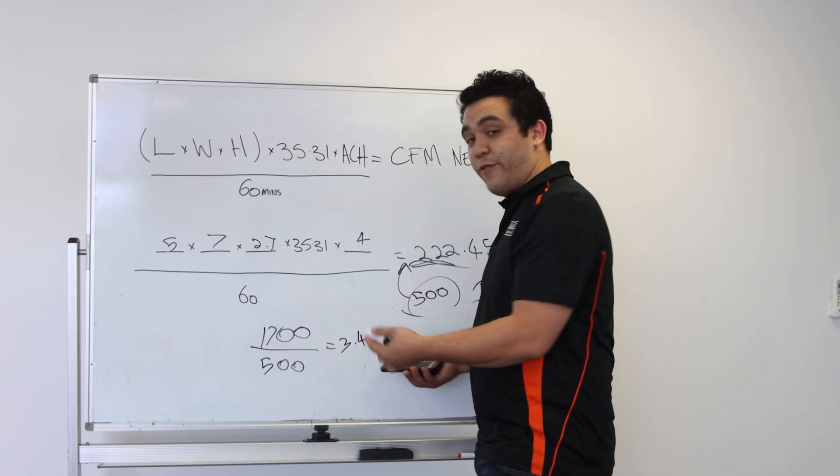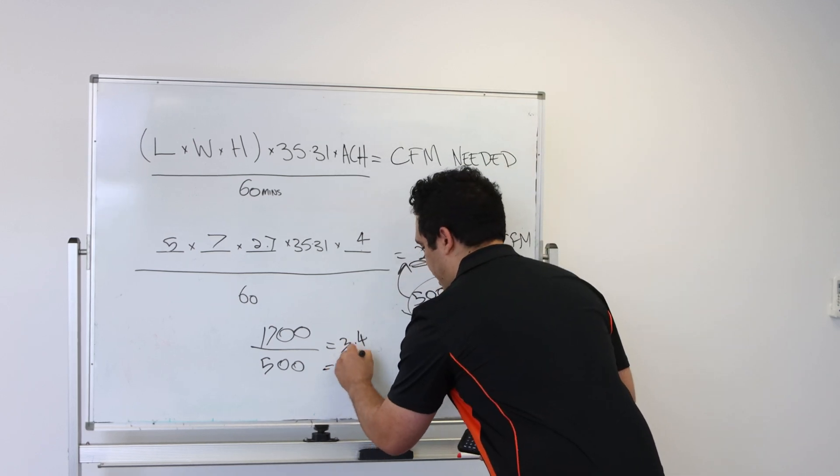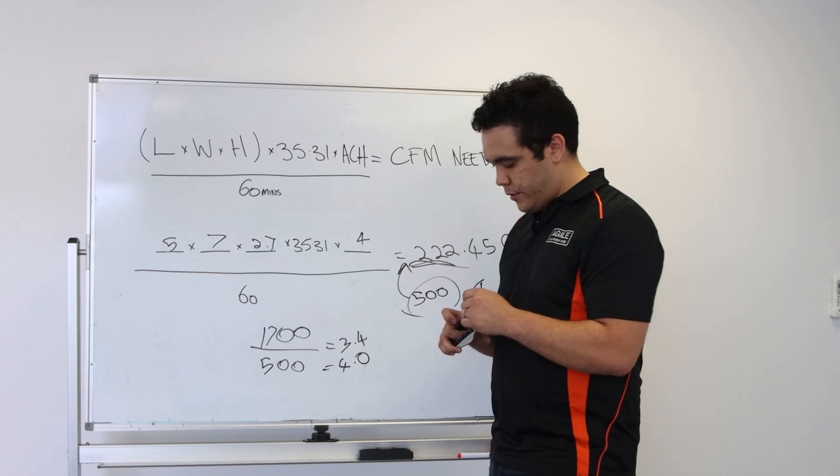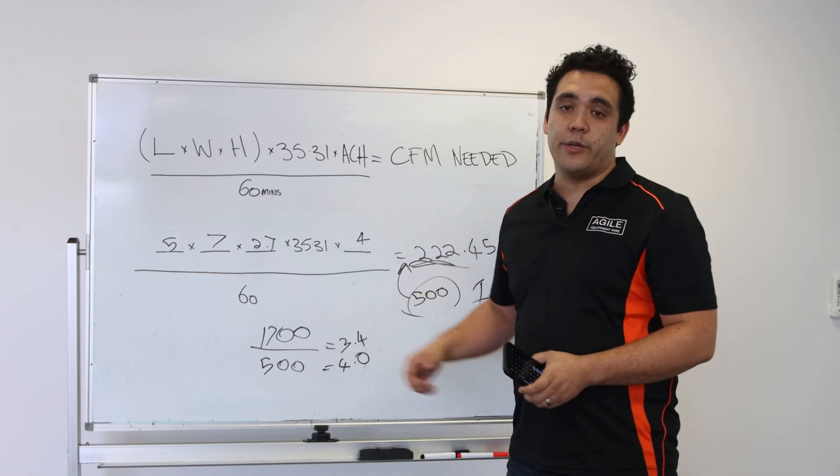Because you can't have 0.4 of a unit, obviously, you would just round up, and you would have four units. So you would need four units to get 1700 cubic feet per minute.